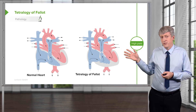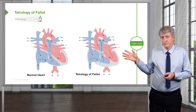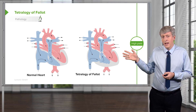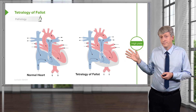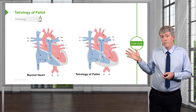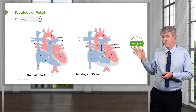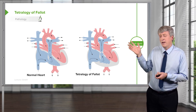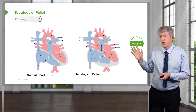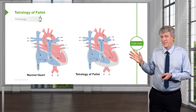On the left side you can see a normal heart, and on the right side of your slide you can see Tetralogy of Fallot. I'm going to walk through the four findings in tetralogy and make it so you're convinced that it's not as complicated as it sounds.